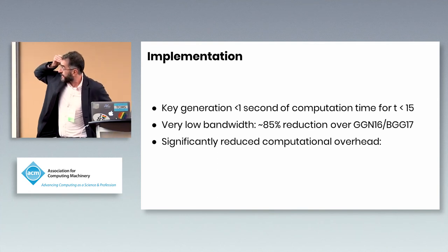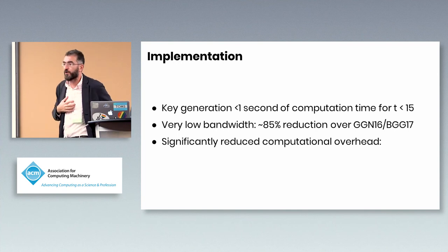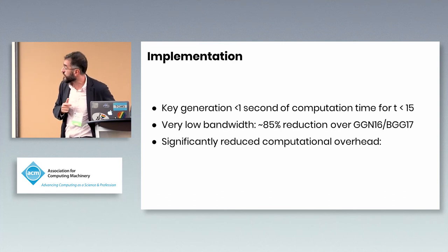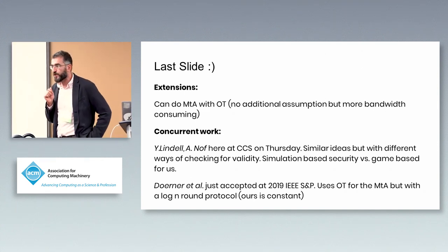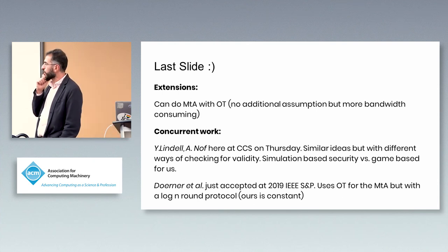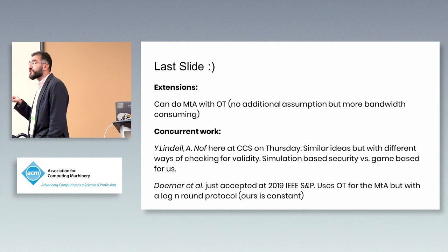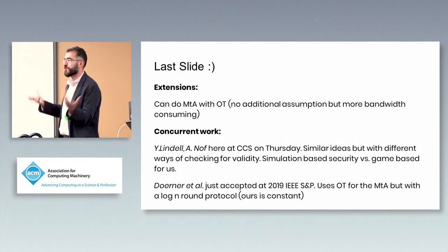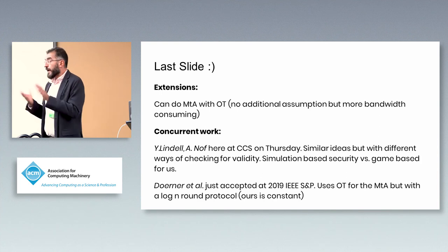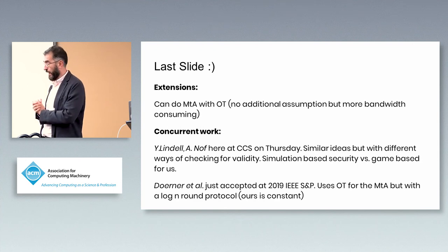We implemented this protocol. The timing results — detailed in the paper — show dramatic improvement over our previous work, particularly in key generation and signature generation. We also have an extension that replaces additively homomorphic encryption with oblivious transfer (OT) for the multiplicative-to-additive conversion. The advantage is that OT can be based on the discrete logarithm assumption, so no extra assumptions beyond DSA are needed.